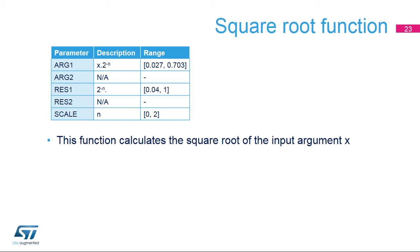This slide describes the features of the square root function. The primary argument is the input value x. Only values of x in the range 0.027 to 2.34 are supported. The value x must be scaled by a factor 2 raised to the negative n, such that x times 2 raised to the negative n is lower than 1 minus 2 raised to the (negative n minus 2) power. The scaled value is programmed in arg1 and the factor n = 1 must be programmed in the scale parameter. The secondary argument is unused. The primary result, res1, is the square root of x; res1 must be multiplied by 2 raised to n to obtain the correct value. The secondary result is not used.